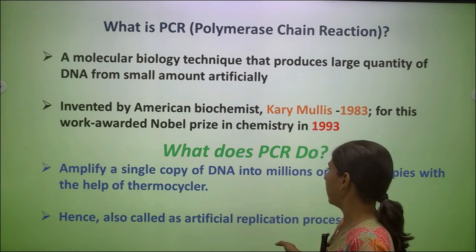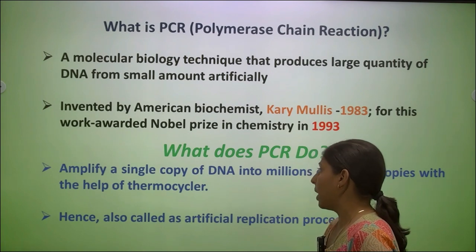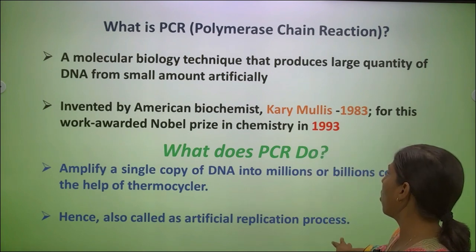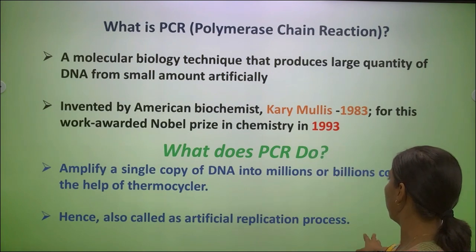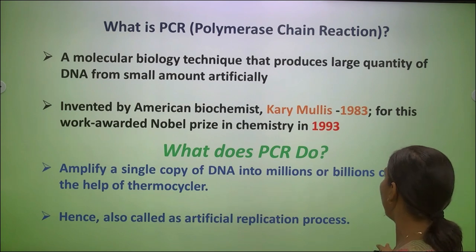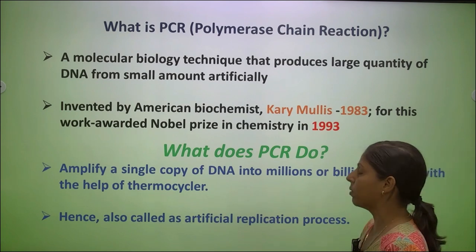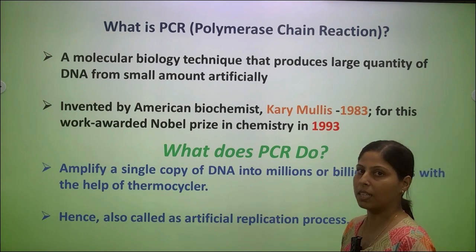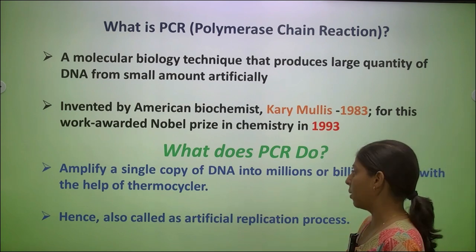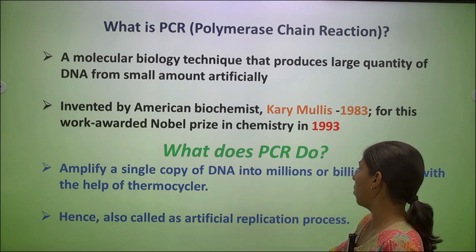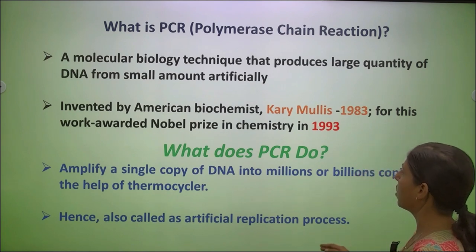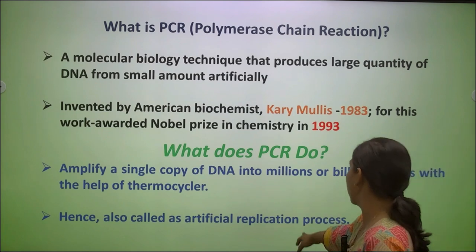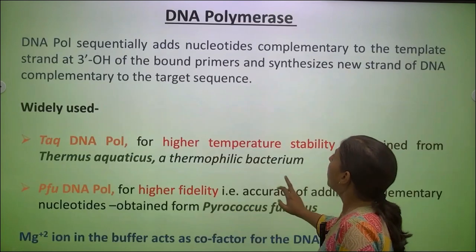Kary Mullis was awarded the Nobel Prize in 1993. PCR amplifies a single copy of DNA into millions or billions of copies with the help of a thermocycler. Hence, it is also called an artificial replication process, because with the help of the thermocycler, millions and billions of copies are produced.